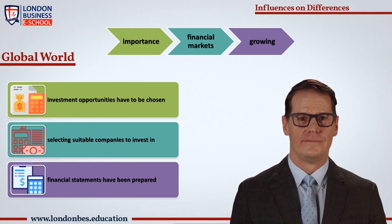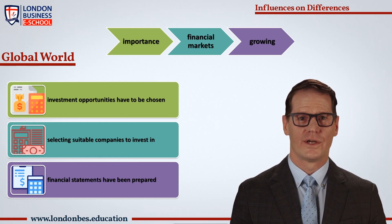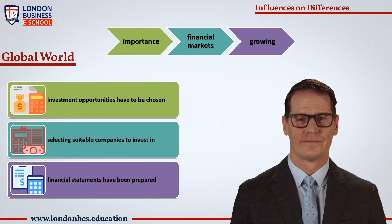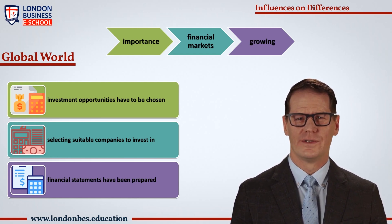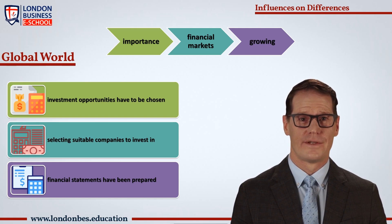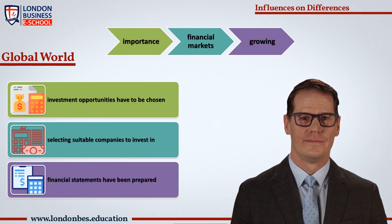Then the influence of five selected accounting transactions on balance sheets and income statements, prepared once according to the Czech legislation and for the second time according to the IAS/IFRS, is analyzed. The final part tries to examine if and how strong the impact of different accounting systems on the results of the selected financial ratios is.